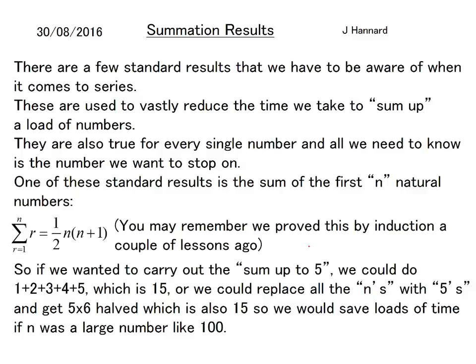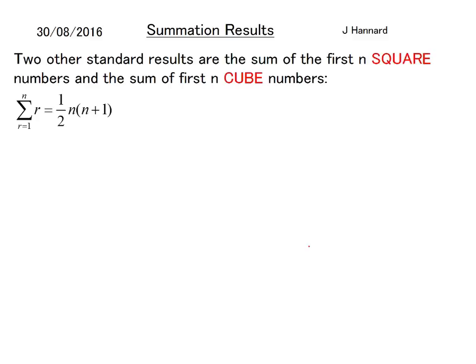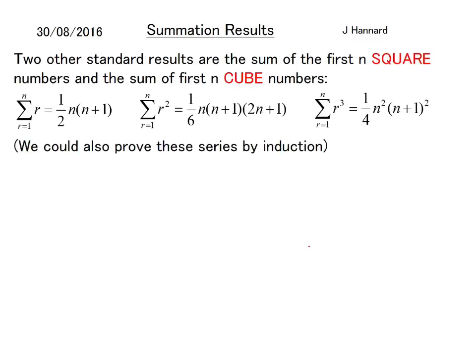Two other standard results are the sum of the first n square numbers and the sum of the first n cube numbers. So it goes natural, square, cube. The sum of r squared is one-sixth of n times n plus 1 times 2n plus 1, and r cubed is n squared times n plus 1 squared over 4. You could also prove those by induction. Funnily enough, I have tried to look for r to the four, but I'm not sure it works. Me and a friend tried different methods like squaring this one because the relationship between the square sum and cube sum is a square, but we never got the answer.